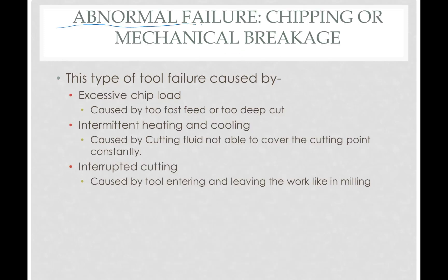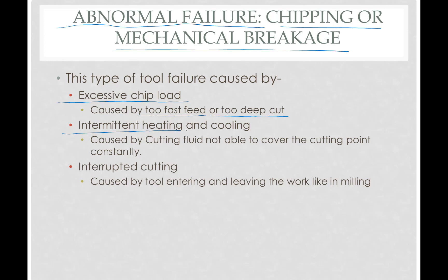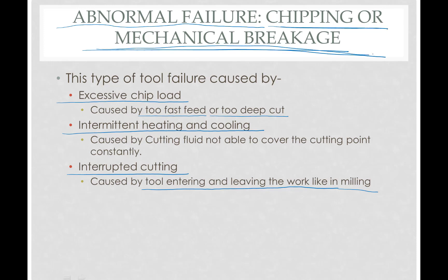The next is abnormal failure — chipping or mechanical breakage. This happens firstly because of excessive load of the chip on the tool, which occurs when using too fast a feed or too deep a cut. It may also happen because of intermittent heating and cooling of the tool — for example when the cutting fluid is not reaching the cutting surface of the tool constantly. The third cause is interrupted cutting, which may happen due to an abrupt change in cross-section, or the tool entering and leaving the work, like in milling.